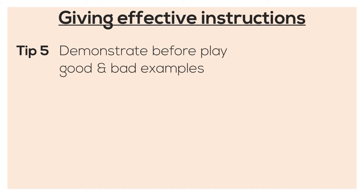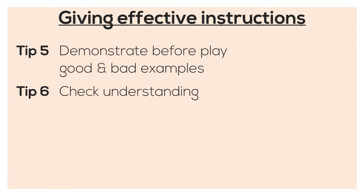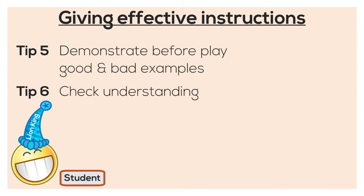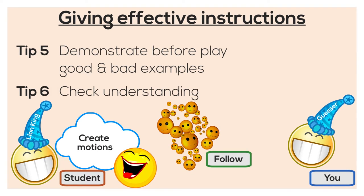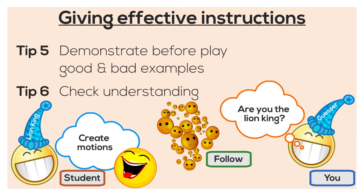So after the good and bad demonstrations, is it time to let your students participate? Nope. There's one more step. Tip number six: check understanding. For example, if hats were prepared, put the Lion King hat on one student and the guesser hat on yourself. Then have one group member encourage the Lion King to create motions, and another group member encourage others to follow along. Then go around and ask students: are you the Lion King? And have them respond. Always check whether your students really understand before you let them play.